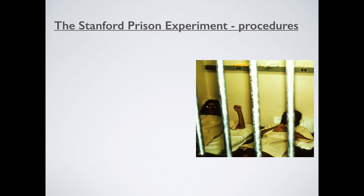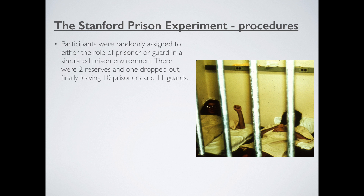In the summer of 1973, he gets 21 men together, and in the flip of a coin, they are randomly assigned to either the role of prisoner or guard in a simulated prison environment. There were two reserves, and one dropped out eventually, leaving the standard 21 — that's 10 prisoners and 11 guards in total.